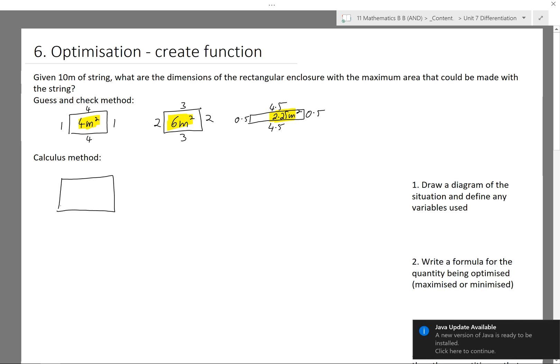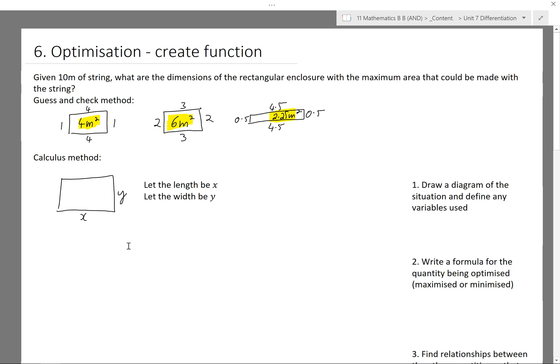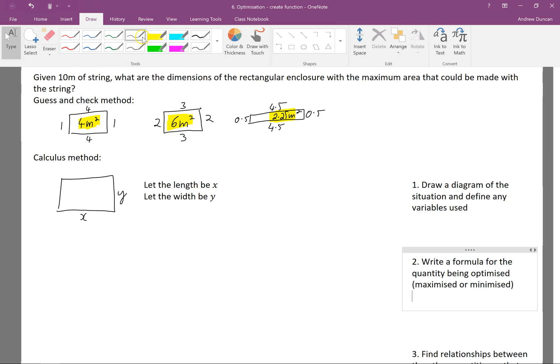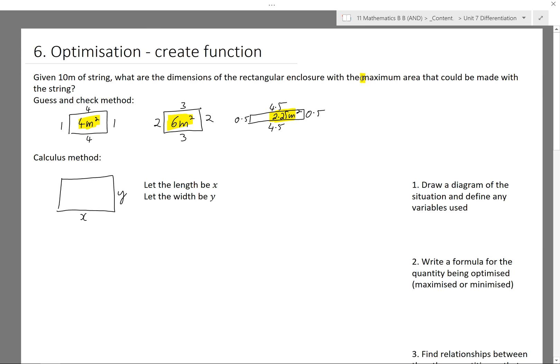But I'm not going to put numbers on the length and width. Instead, I'm just going to put letters. So I'm going to say, let the length be x and the width be y. And I'll make sure that I define that as well, so define my variables so that when I write my equations, I'll have some idea of what I'm referring to. Point two, write a formula for the quantity being optimized, so the quantity being maximized or minimized. I'll look in my question